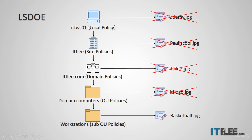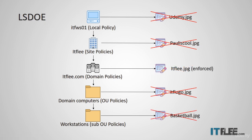So we started with local, went down to site, then domain, then OU, then sub-OU — and the sub-OU is taking precedence over all other options. But if we enforce the domain policy itflea.jpg, enforced is the last item in the order of precedence, so the enforced itflea.jpg domain policy will take precedence over all the other GPOs.